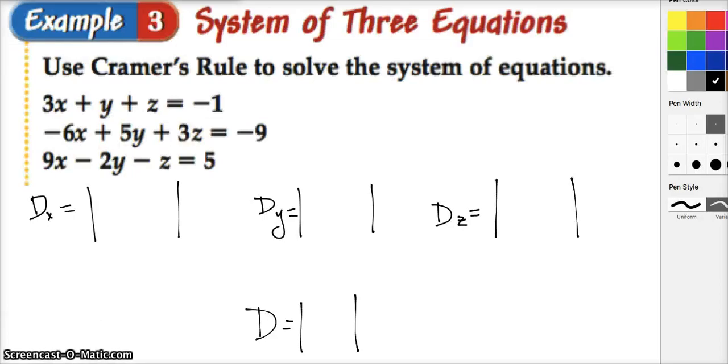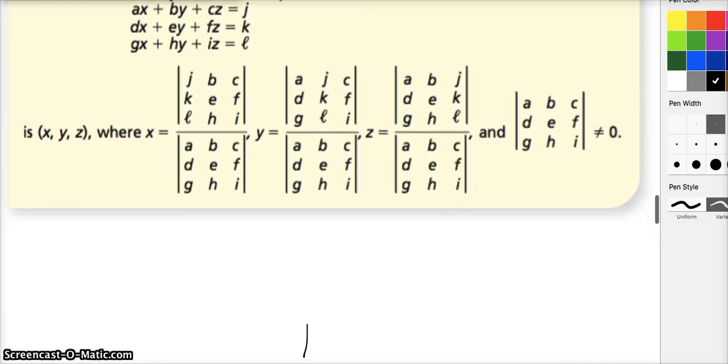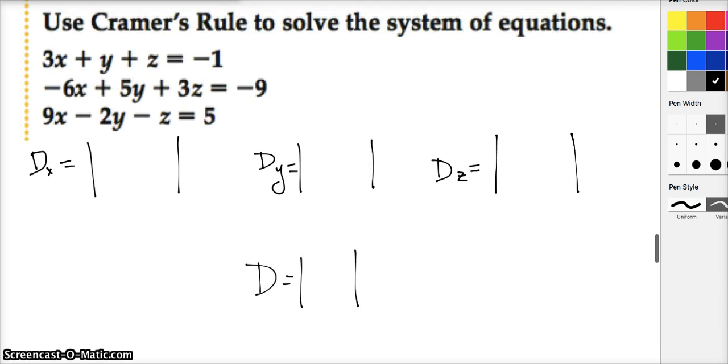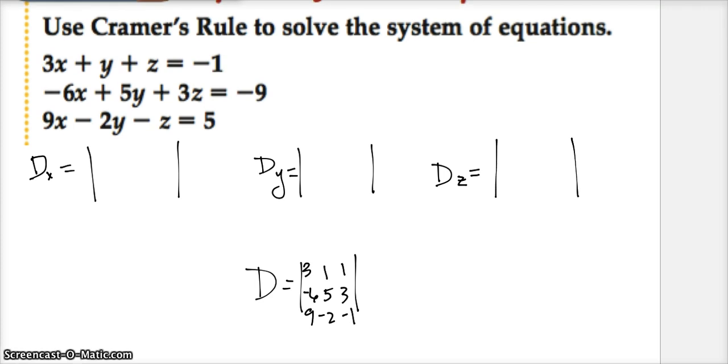Example three, we're going to use Kramer's rule to solve our problem. So let's come up with the determinants. The first thing we need to do is make sure everything is lined up correctly, X, Y, Z order. Everything's cool. First thing I'm going to do is come up with the general denominator determinant.